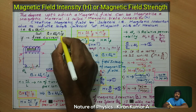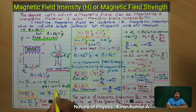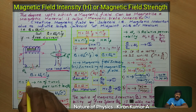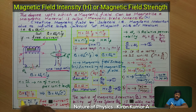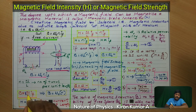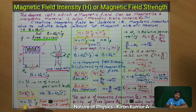In B = μ₀nI, small n represents the number of turns per unit length, where small n = N/L. Substituting, we get B = μ₀(N/L)If. This can be written as B = μ₀H, where H = (N/L) × If, which represents the free current per unit length.